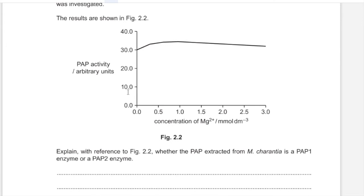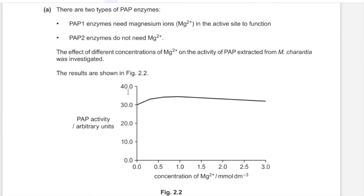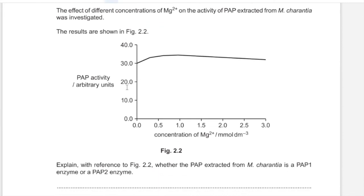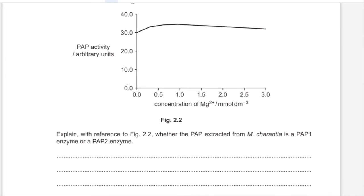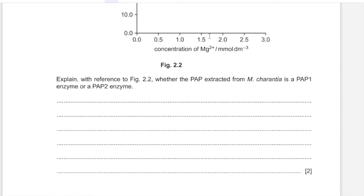With reference to Figure 2.2, whether PAP extracted from Bittergard is a PAP1 or PAP2 enzyme: it would be a PAP2 enzyme, since it does not require magnesium ions to function initially and does not show much of an increase in activity after the ion concentration increases.